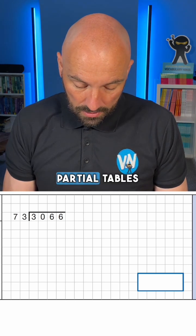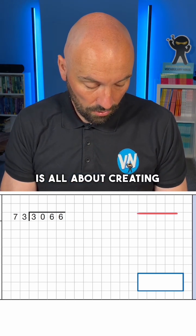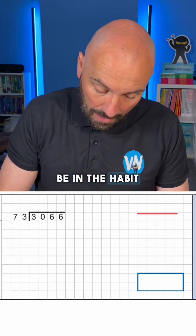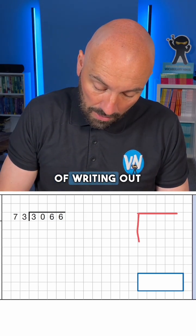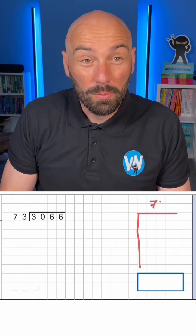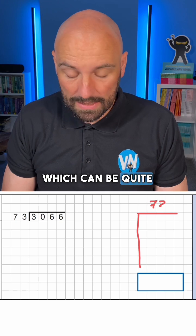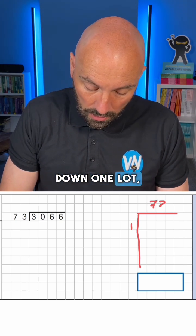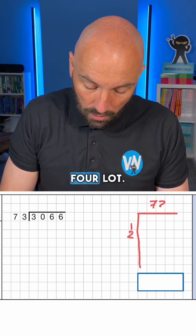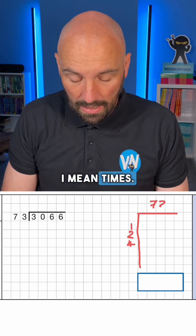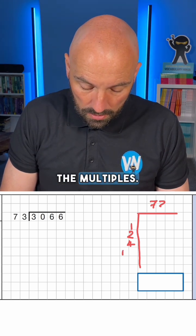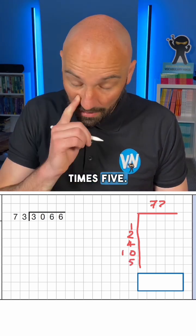Partial tables is all about creating part of the times table. A lot of you will be in the habit of writing out the whole times table, which can be quite time consuming. So what we're going to do is write down one lot, two lots, four lots — when I say lots, I mean times, the multiples — times 10, and times 5.